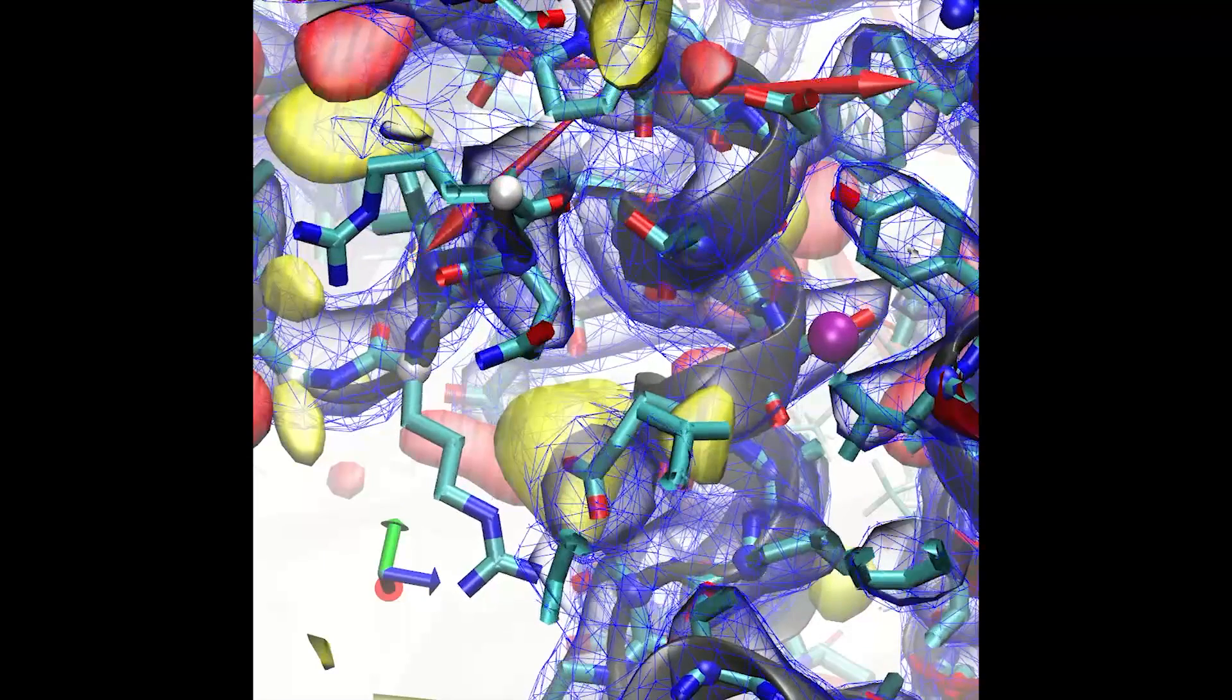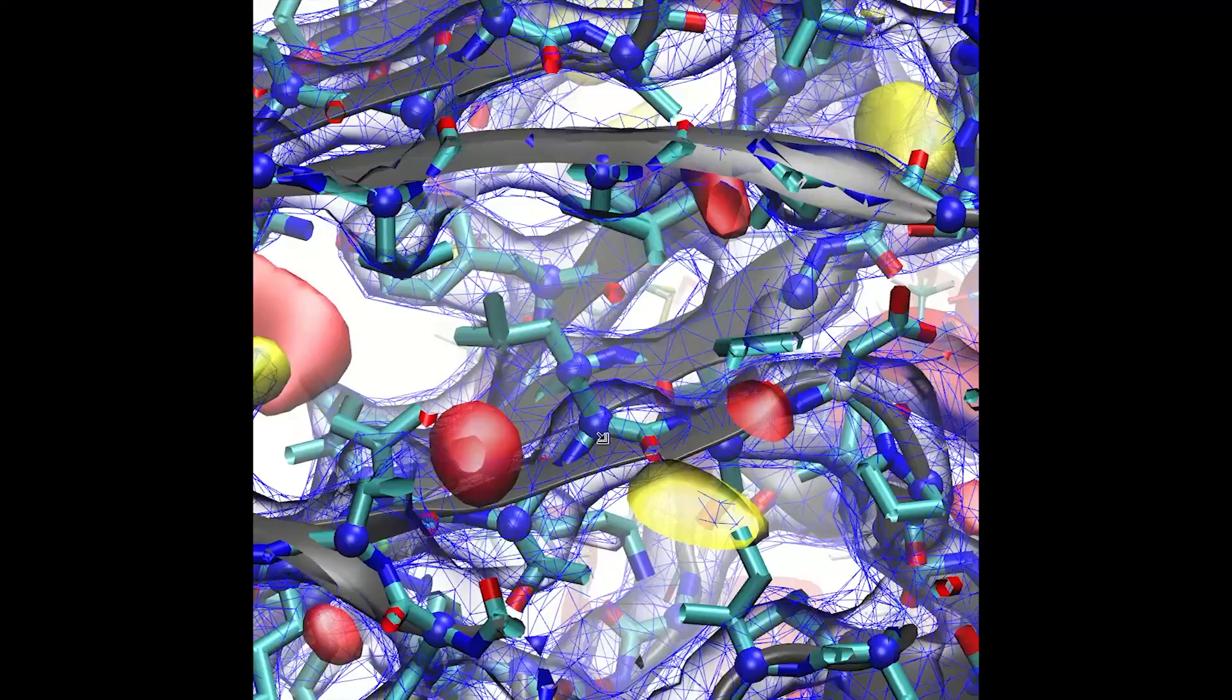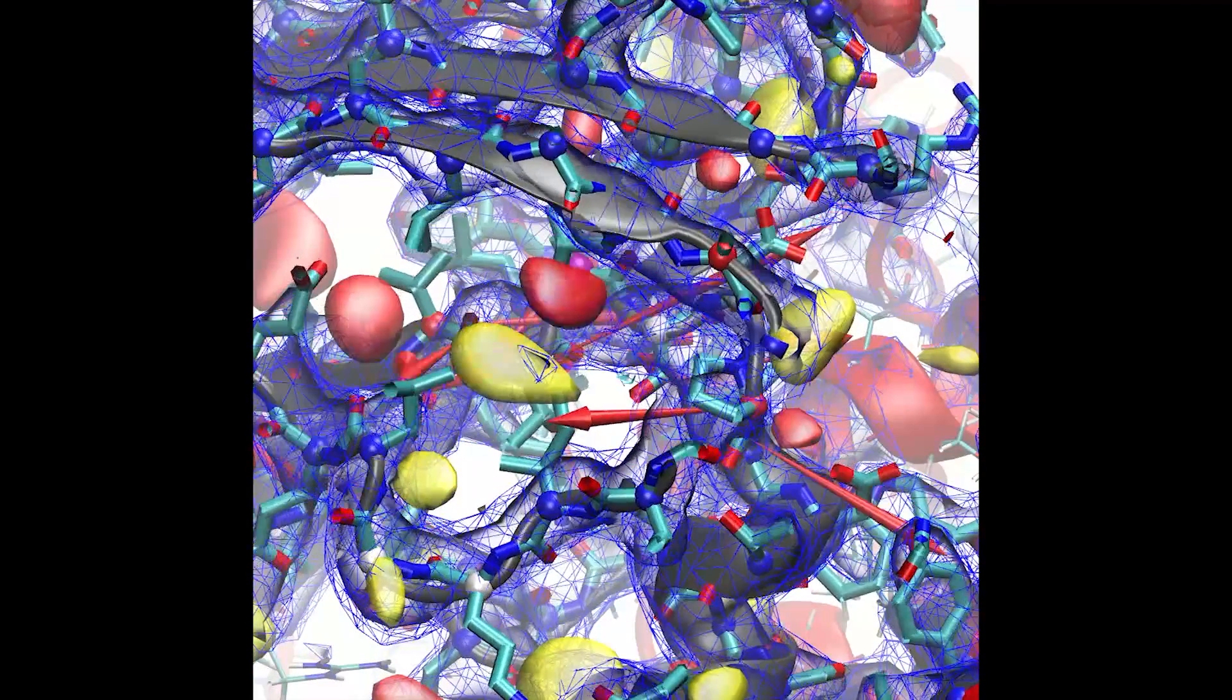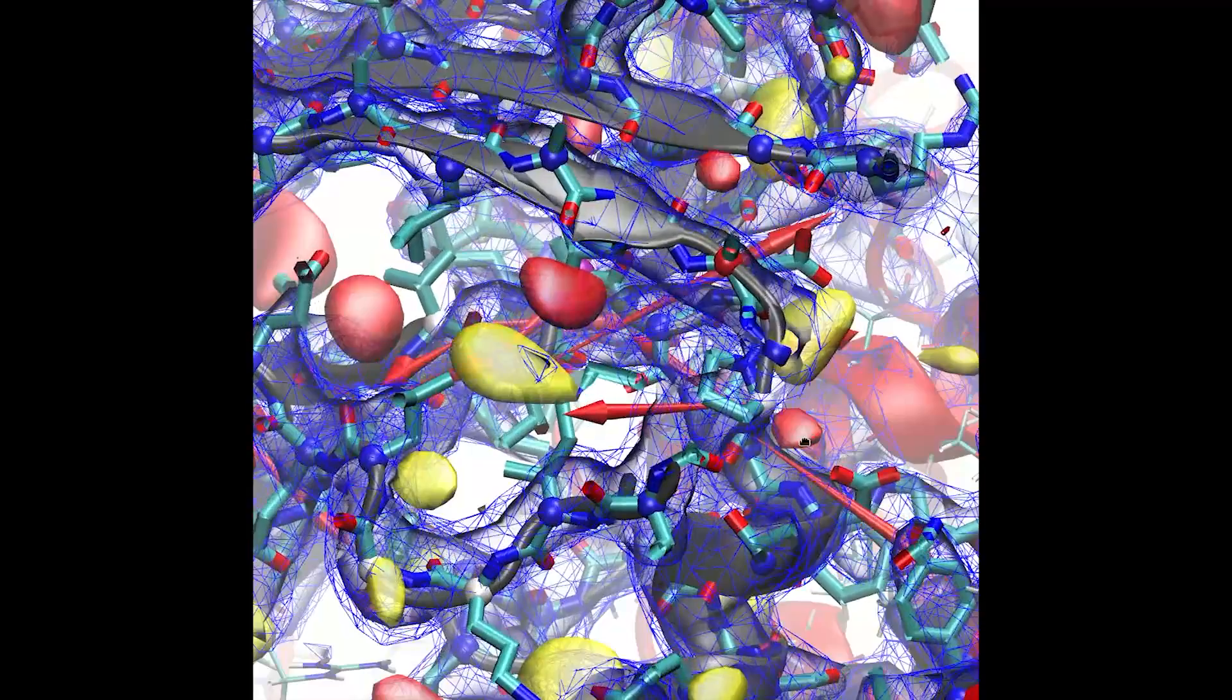Next I'm going to select an atom from the adjacent beta strand and ask the simulation to move the whole strand two residues towards the C terminus. The extent of the strand is automatically detected, and biasing forces are added to the C alpha and beta atoms to guide them towards their target.